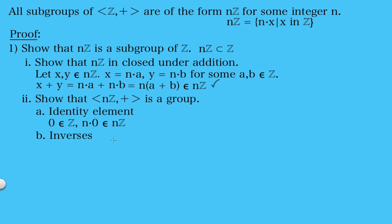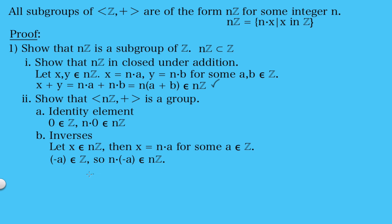Next, we need to show that it has inverses. We're going to let x be an arbitrary element in this set of integer multiples of n. Then we can write x as n times a for some integer a. Now since a is an integer, we know that negative a also must be an integer, so that tells us that n times negative a must be in the integer multiples of n as well. And of course this is our inverse for our original element x, so we have shown that it is closed under inverses.